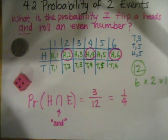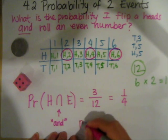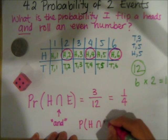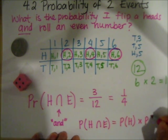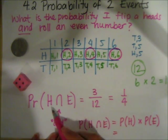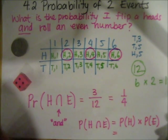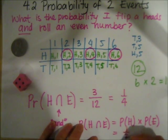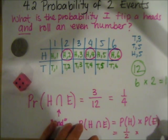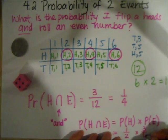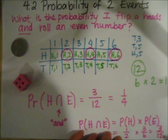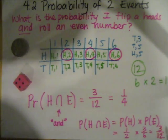There is a formula for working this out if you don't want to draw a table every time. The probability of getting something and something else means you multiply the probabilities together. The probability of heads when tossing a coin is one half, and the probability of an even number when rolling a dice is three sixths — also a half. Multiplying those together: one times three is three, two times six is twelve — so three twelfths, or one quarter, which matches.